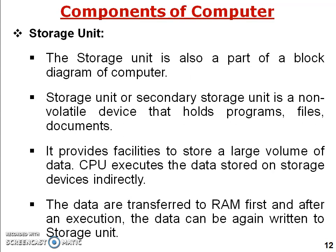The secondary storage unit is also part of the block diagram. It is a non-volatile device that holds programs, files, and documents for future use. It provides the facility to store a large volume of data. Examples of secondary storage units are hard disk drives, external hard disk drives, CD drives, and flash drives. Data is transferred to RAM first, and after execution the data can be returned to secondary storage. So offline data moves from secondary storage to RAM and can also be returned from RAM back to secondary storage.